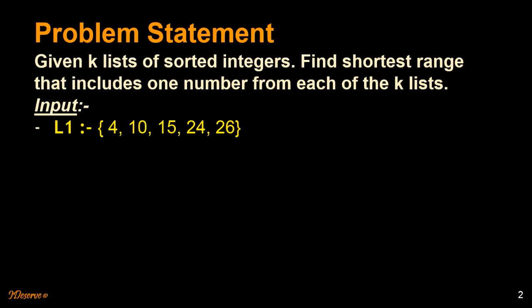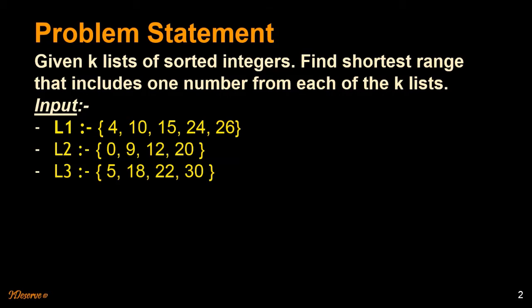For example, if we have inputs like L1 equal to 4, 10, 15, 24, and 26 — that is list 1 — and list 2 and list 3, we want to find a range which would be the shortest and would include at least one number from each of these lists.